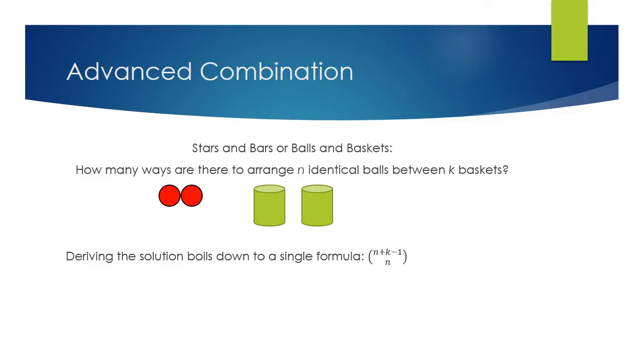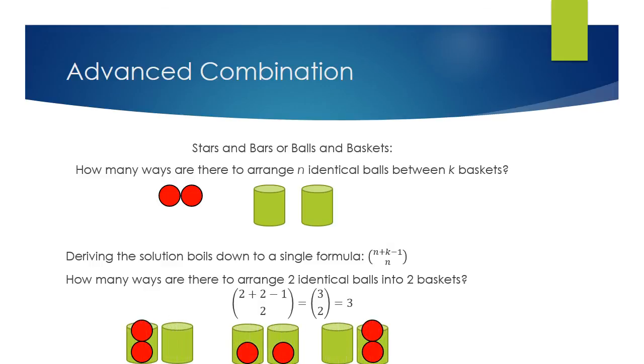So n is your objects. So if I take the picture, where we have two identical balls and two baskets, and I just plug in those values into our formula, you'll see that we should get three ways of arranging two balls into two baskets. And I've put that for you here. So you could put two into one basket, two into the other basket, or you can split them between both baskets.